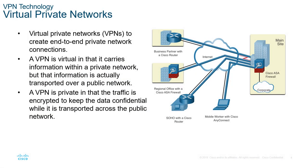VPN technologies essentially involve building a private virtual network through another form of network, normally creating an end-to-end private network. Even though this is the internet — a public cloud — we can actually mimic a link through the public internet and make it seem like there is no network in between. The data is going to be encrypted so there shouldn't be any confidentiality issues.